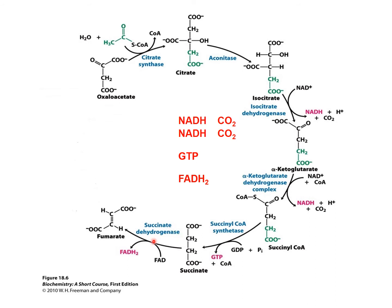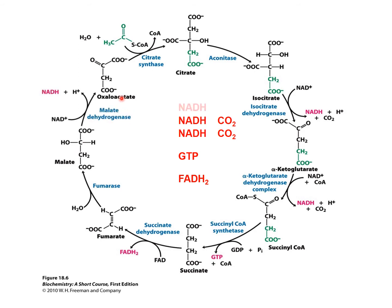Fumarate is then hydrated to form a malate molecule. In this reaction, 1 water molecule is added because it is a hydration reaction, catalyzed by the enzyme fumarase. Last but not least, malate is oxidized back into oxaloacetate, another oxidation process that produces 1 NADH. With that, oxaloacetate can interact with another acetyl coenzyme A and restart the whole cycle again.